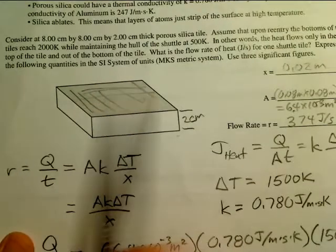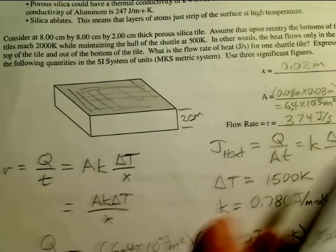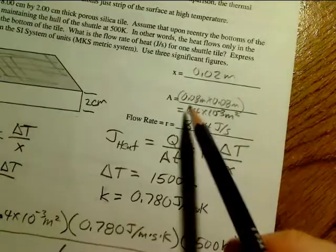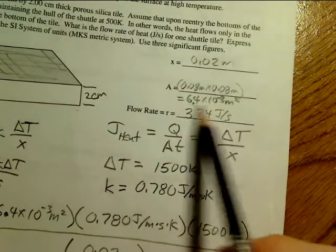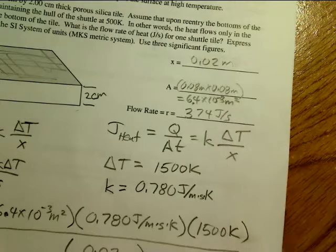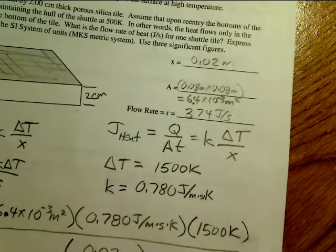The heat is only going to go through the cross-sectional area. It doesn't come out the sides in this problem, so you simply take the length and the width given in the problem to find the area here, 6.4 times 10 to the minus 3 meters squared.